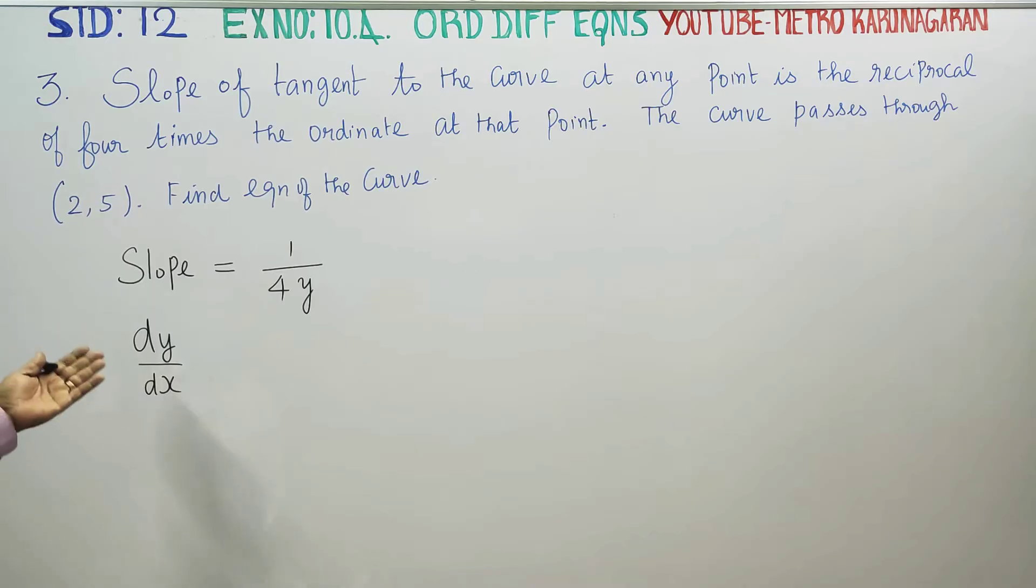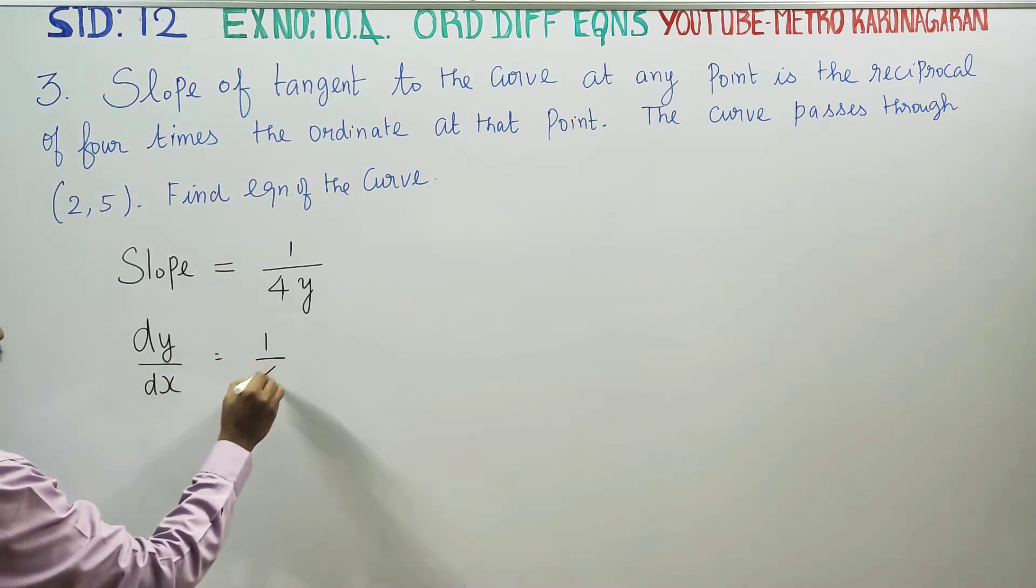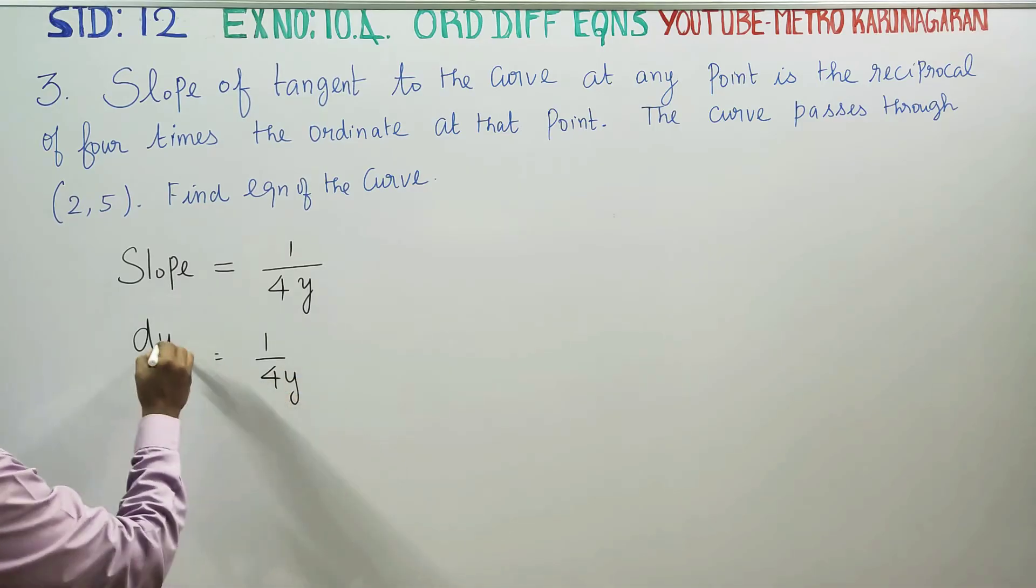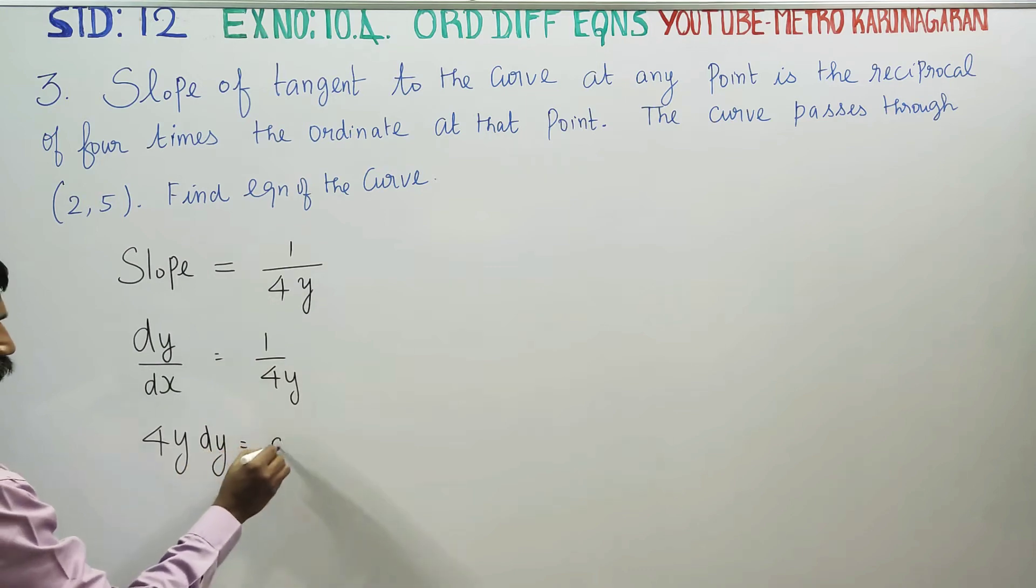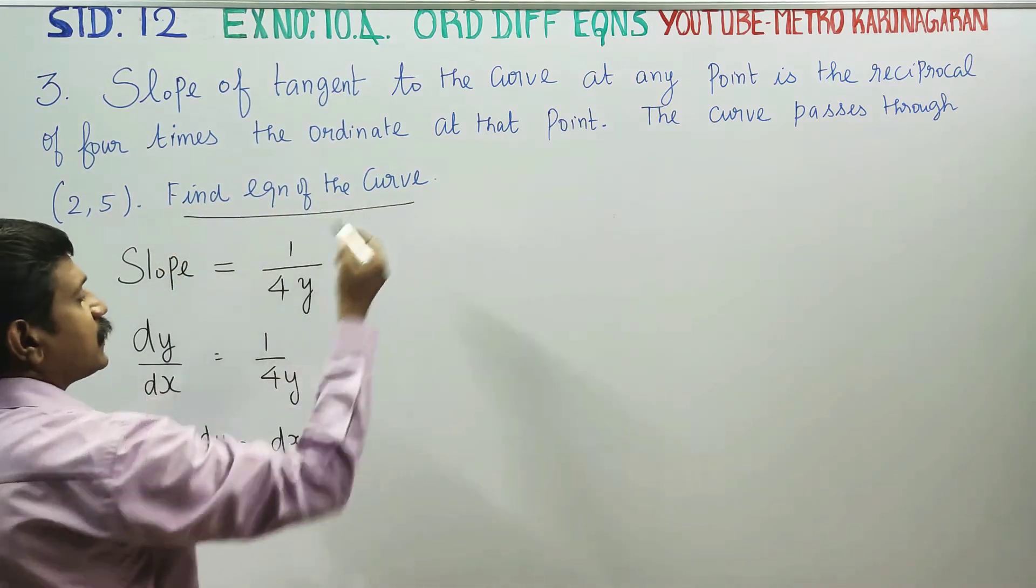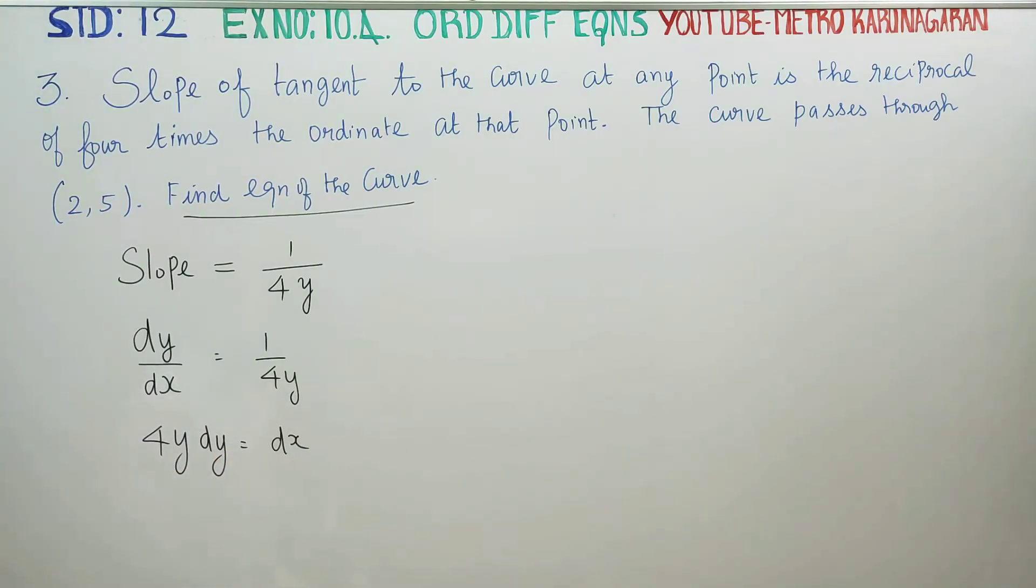The slope of the tangent at a point is dy by dx is equal to 1 by 4y. Just cross multiply, 4y dy is equal to dx. We have the differential equation.